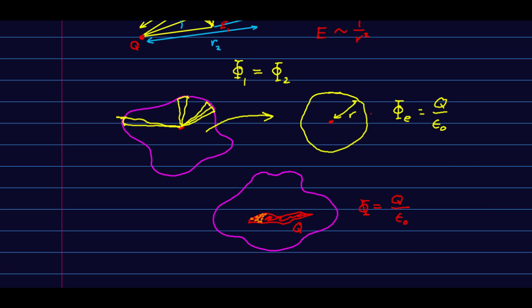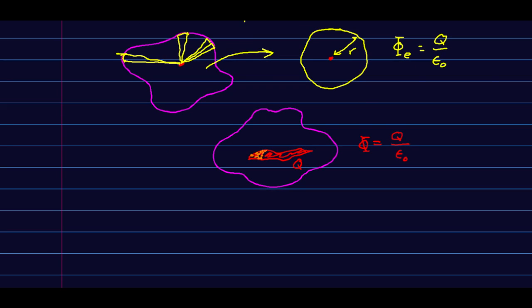Well, that is Gauss's law, right there. Gauss's law says that for any charge, for any charge distribution, and any surface around it, the flux is always equal to the charge inside the surface over epsilon naught.